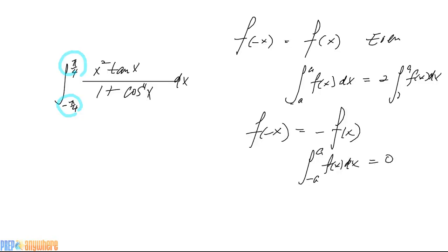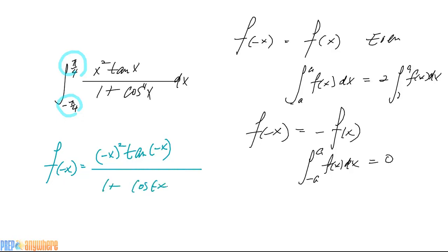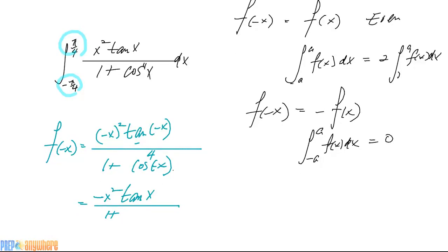So let's replace x with minus x. On this function we get minus x squared times tangent of minus x, all over 1 plus cosine of minus x to the power of 4. That becomes x squared times tangent of minus x, which by the odd angle property is minus tangent of x. And cosine of negative x equals cosine of x by even angle properties. So you can see this equals minus of the original function.